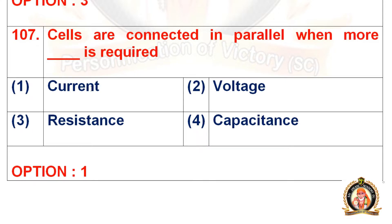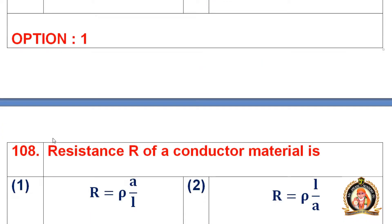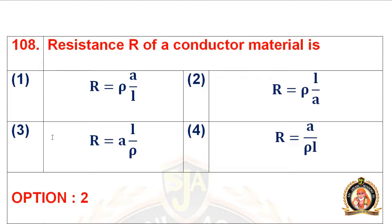Question 107: Cells are connected in parallel when more dash is required. The options are current, voltage, resistance, and capacitance. The right option is the first option, that is current. Cells are connected in parallel when more current is required.